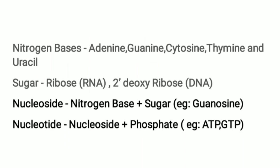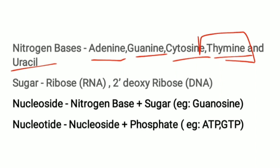Now let us brush up some of the basics. The nitrogen bases present in the body are adenine, guanine, cytosine, thymine, and uracil. Thymine is present only in DNA, and uracil is present only in RNA.